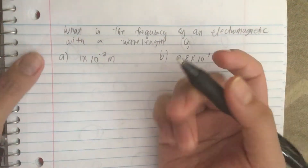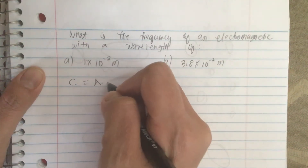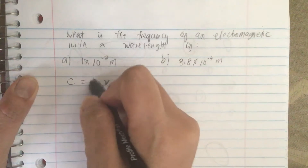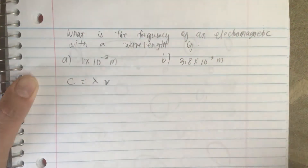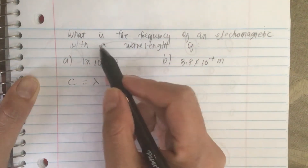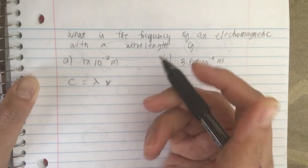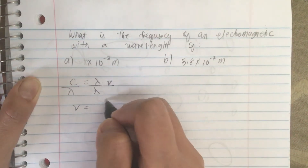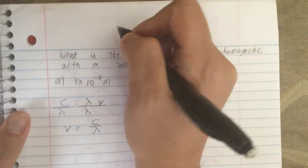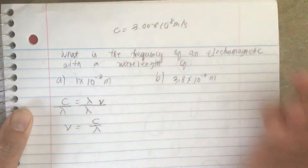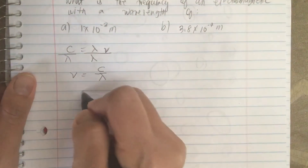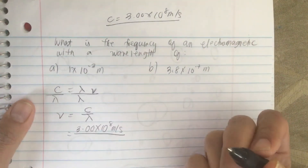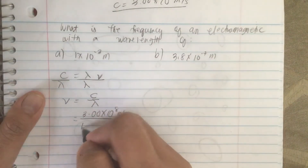So let's do part a first. c is equal to the wavelength times the frequency — lambda times mu. They asked for the frequency, so we solve for mu by putting lambda on the other side: frequency is equal to c over lambda. Now c is equal to 3.00 times 10 to the 8 meters per second, and the wavelength is 1 times 10 to the minus 3 meters.